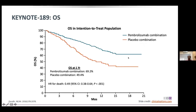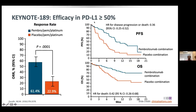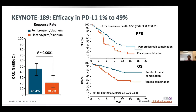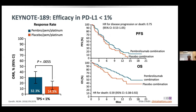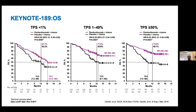As seen in all these graphs, the tail of the curve is what we are most interested in. For PDL1 more than 50%, the response rate was 61% versus 22% — a difference of almost 40% — with marked differences in PFS and OS. For 1 to 49% there is a difference, and for less than 1% there is still an approximately 20% difference, showing that combining chemotherapy with pembrolizumab benefits even those with less than 1% PDL1 expression.